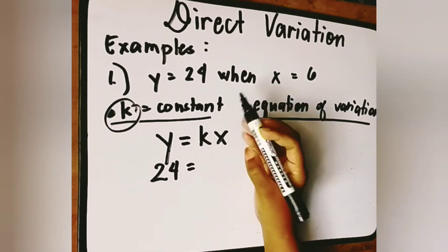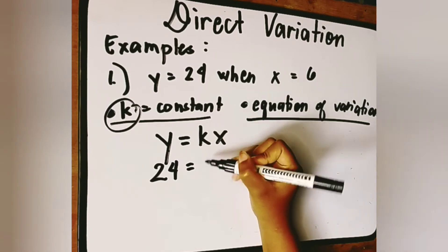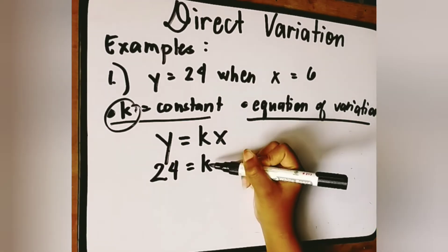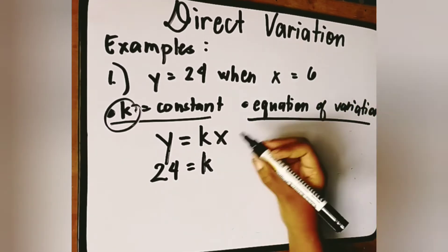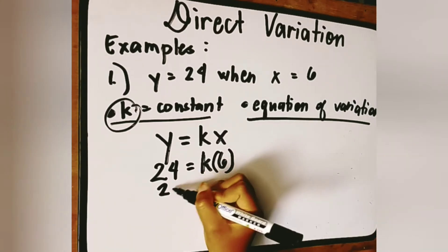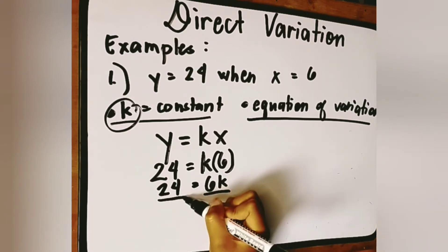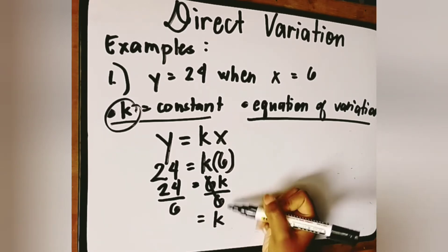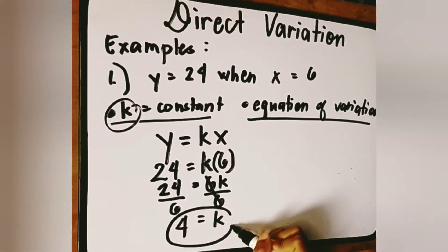So we just have to substitute 24 for y, copy k since that is the constant we are going to find, and substitute 6 for x. So we have 24 is equal to k times 6, which is 6k. To find the value of k, divide both sides by 6.